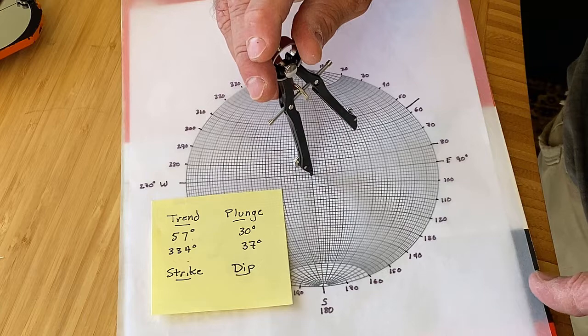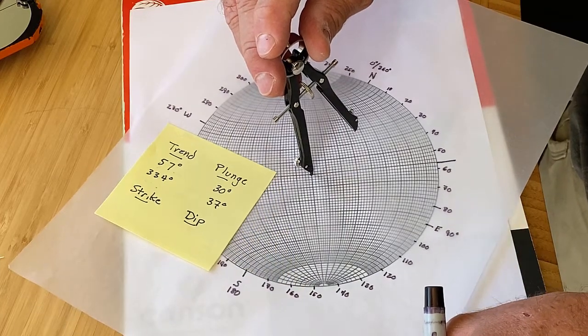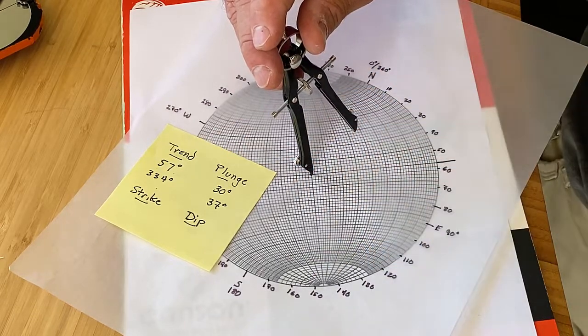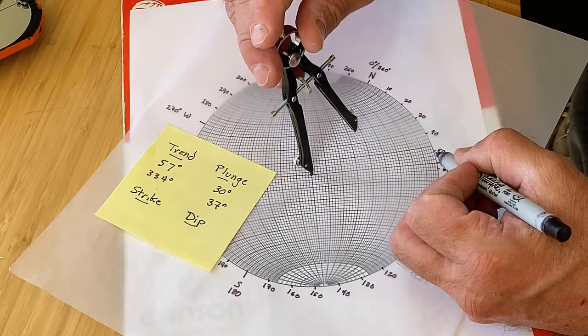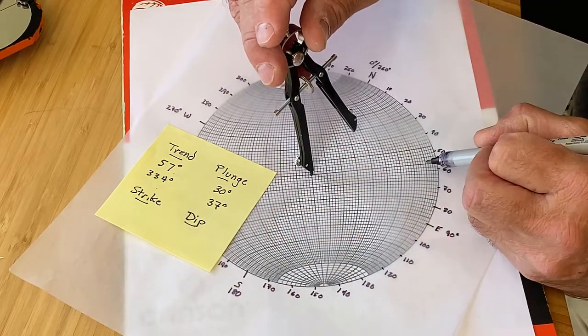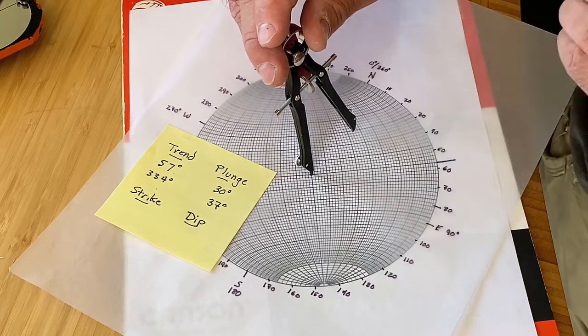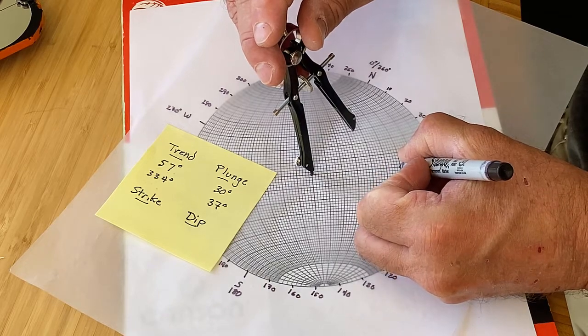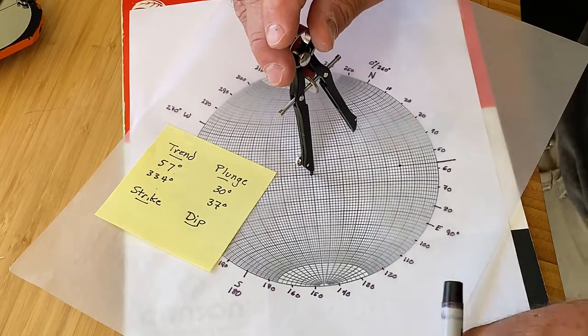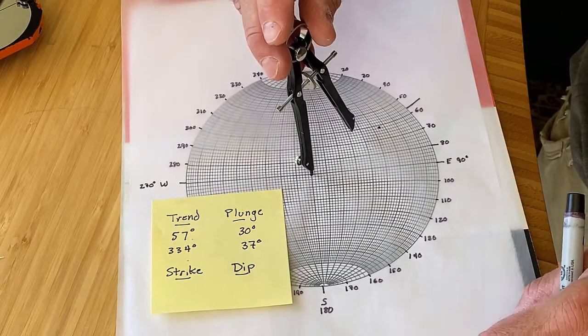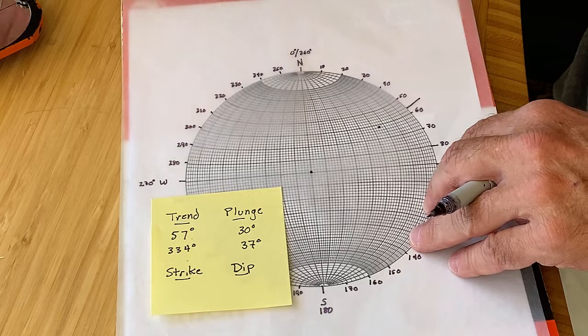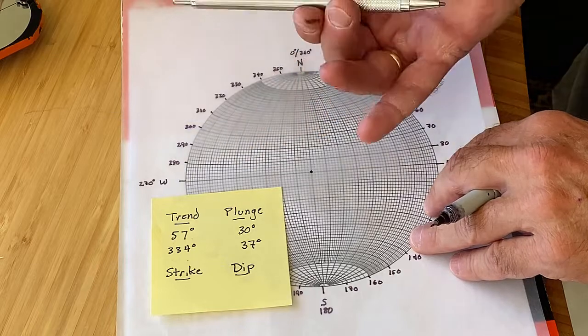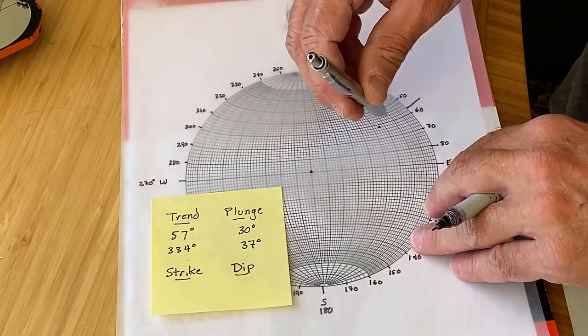And so to do that, we hold the paper down and we can rotate this around so that that 57 degree mark is now on one of the so-called primitive lines—in this case the east-west line. And we can count in 30 degrees with these heavy lines being the 10 degree increments: it's 10, 20, 30 degrees. There is our mark for 30 degrees. So now when we return this up to north, you can see this is effectively a line that is dipping into the interior of a bowl, and this is the intersection point where that hits the edge of the bowl.